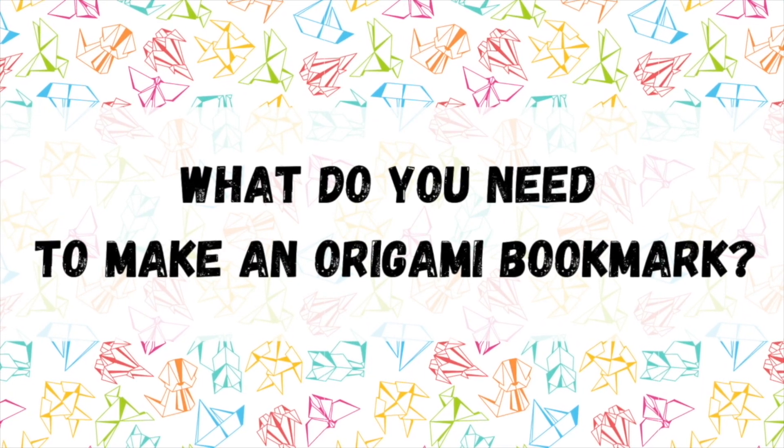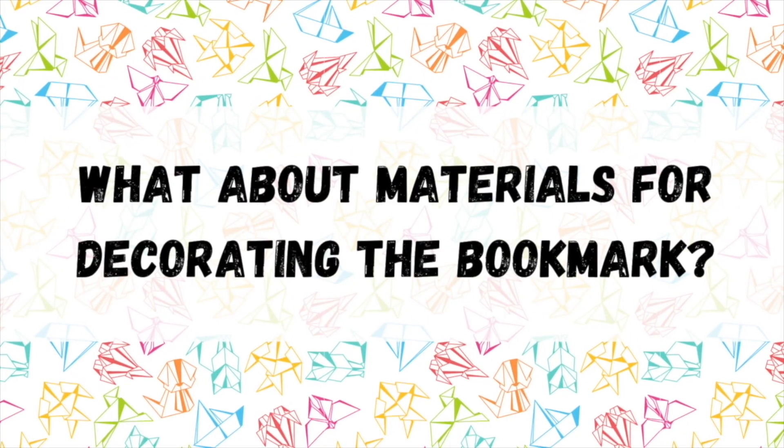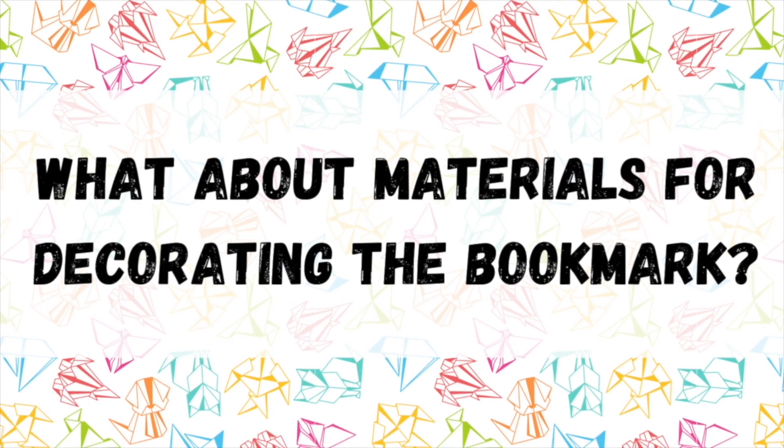To make the origami bookmark all you need is a square sheet of paper. Origami paper works well since it usually comes in a square shape. Decorating your bookmark is optional but here are some ideas for materials you can use.